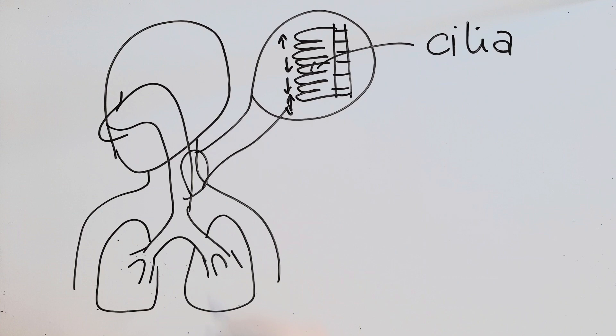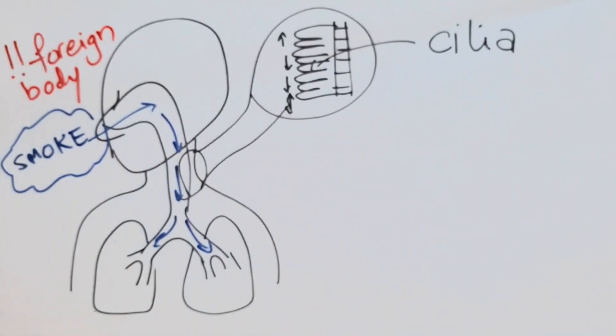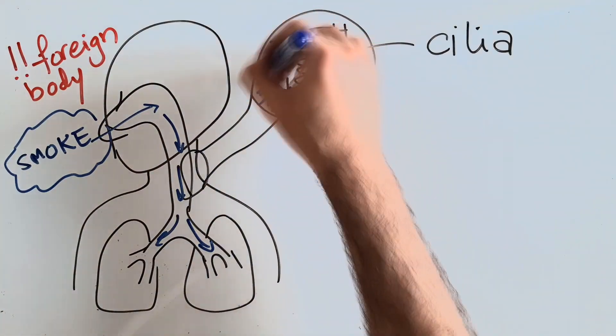the trachea and the bronchioles, we have these airways lined with something called cilia. Those cilia are like little tiny hairs that are supposed to push out any foreign object or substance outside of the lungs in order not to harm it. Now when the smoke goes through these airways consistently,